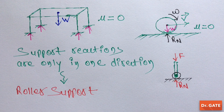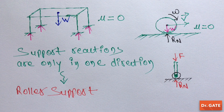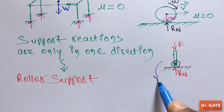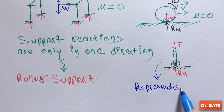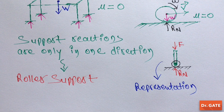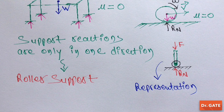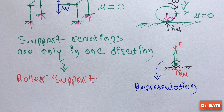So from now onwards, whenever you see this type of diagram in mechanics, it would mean that it is a representation of a real life situation. It doesn't always mean that there is a physical roller. So once again, it is just a representation.